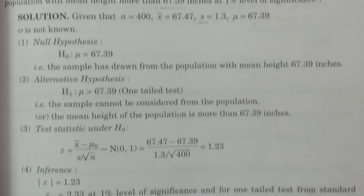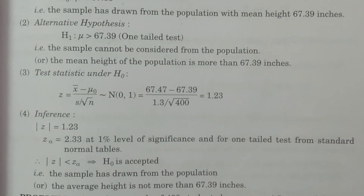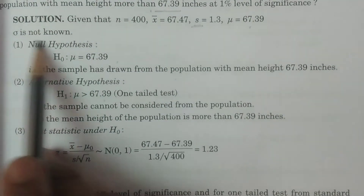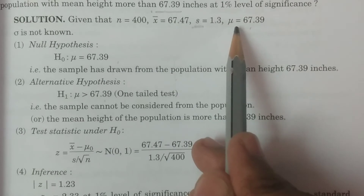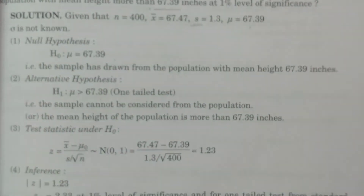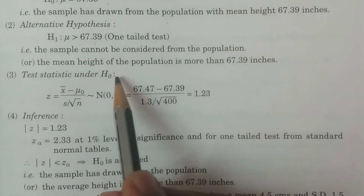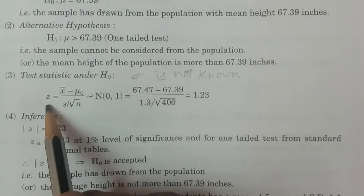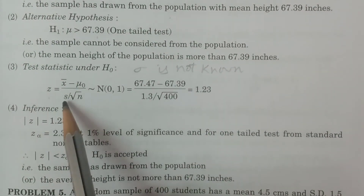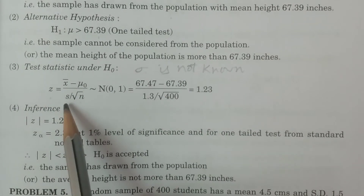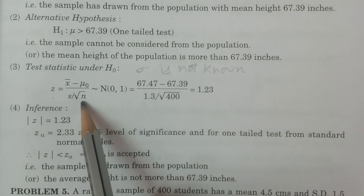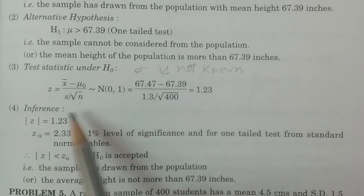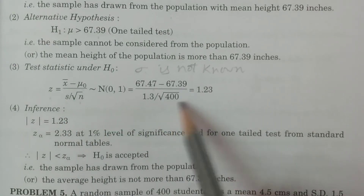The third point is the test statistic under H₀. Here the case is clear: sigma is not known — sigma is not given. You see, n, x̄, s, and μ are the values given, so sigma is not known. Therefore, z = (x̄ − μ₀) / (s / √n). Since sigma is not given, the formula uses s/√n. Substituting: z = (67.47 − 67.39) / (1.3 / √400) = 1.23.